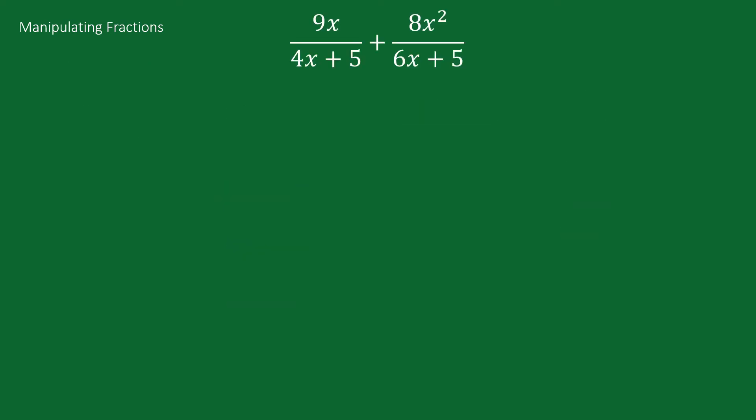Now that we have the basics of fractions down, let's take a look at solving a fractional expression. For example, 9x over 4x plus 5 plus 8x squared over 6x plus 5. From our basic rules we know that we need to multiply the denominators together to get the common denominator. Our common denominator is 4x plus 5 times 6x plus 5.